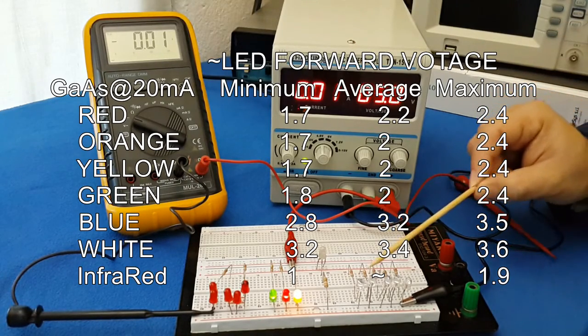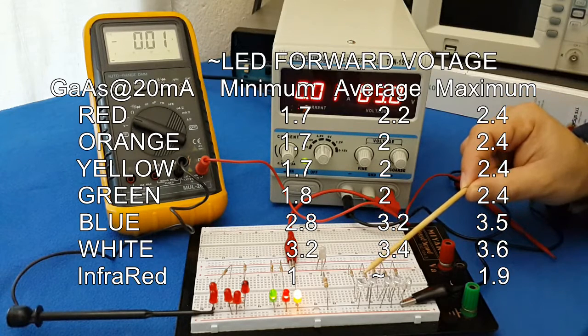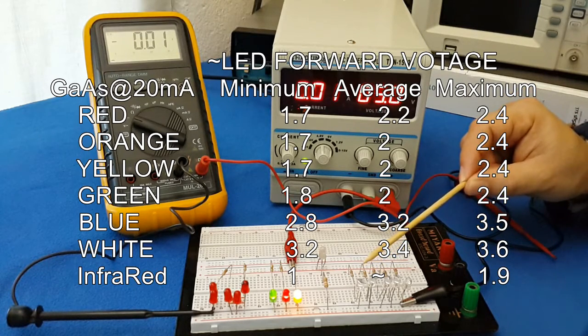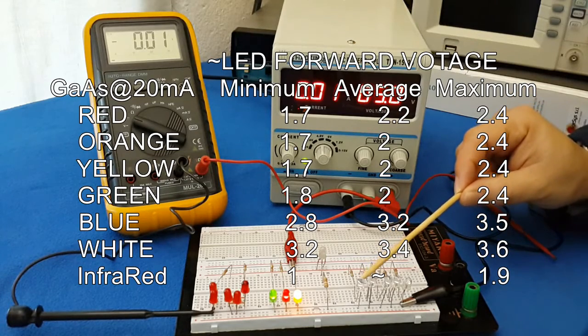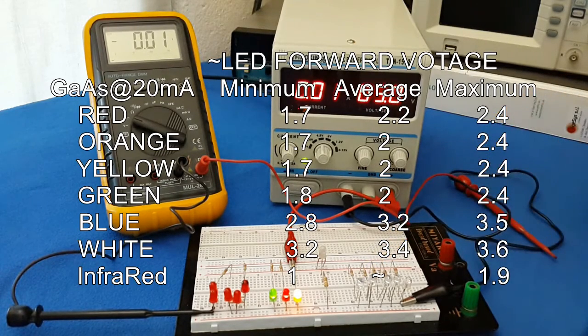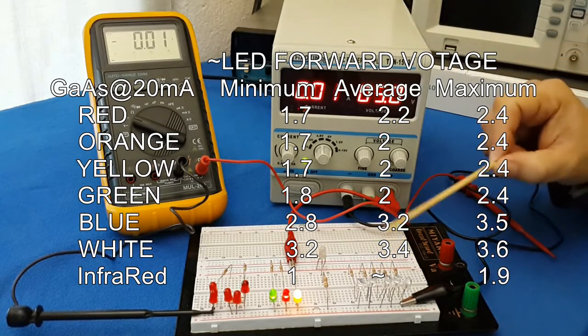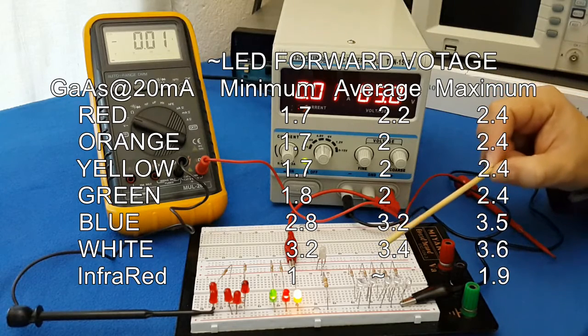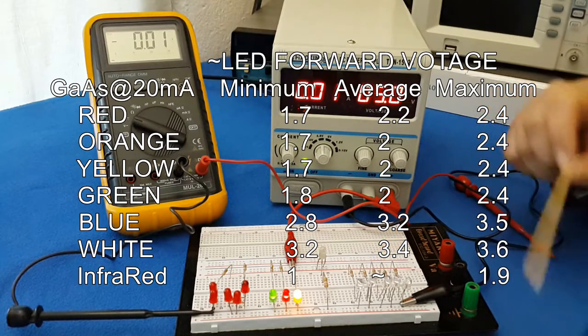Some LEDs, like the blue one, will be 2.8 minimum, 3.2 average, 3.5 volts the maximum voltage drop across of it. I don't have here the white color. And the white is typical 3.5 and maximum 4 volts.